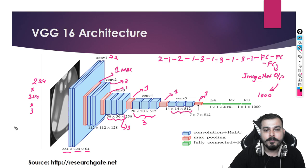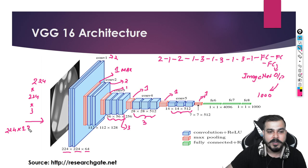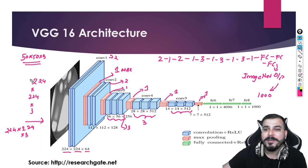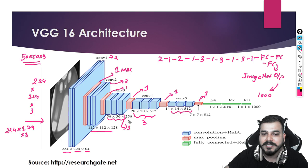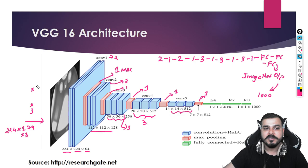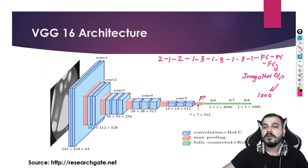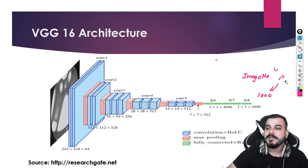The overall architecture takes an image of 224×224×3, but when implementing you can always change the image size — you can give 50×50×3 depending on the image quality you have. Now, how did we get these values? I'm going to discuss that in the next diagram along with the filter size. This is a very very simple and easy-to-remember model once you understand the pattern.